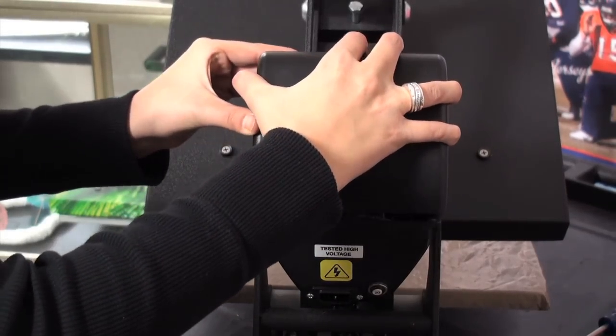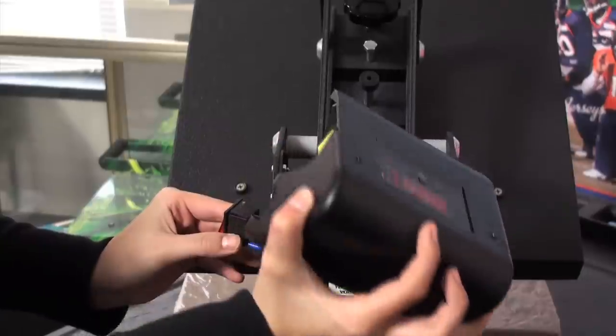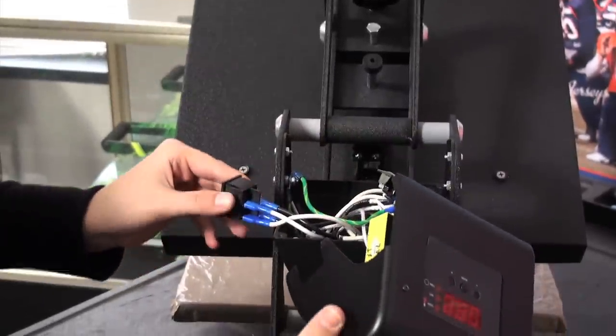After removing the screws, remove the housing cover. If it hasn't come loose already, go ahead and pull the on-off switch out of the housing cover.